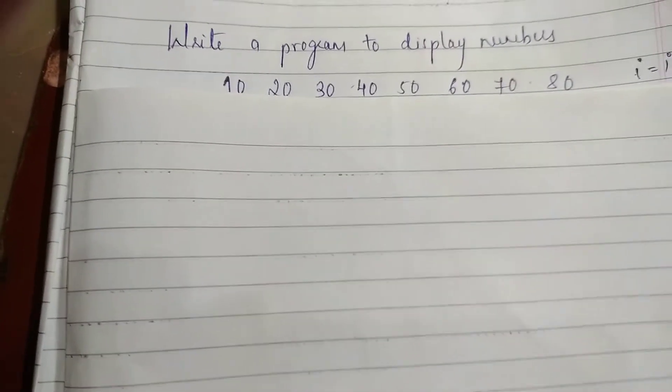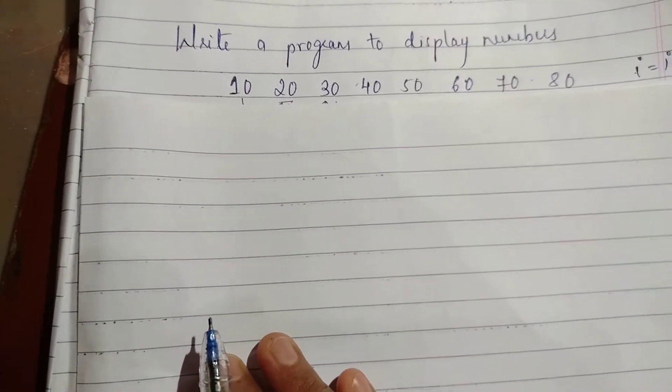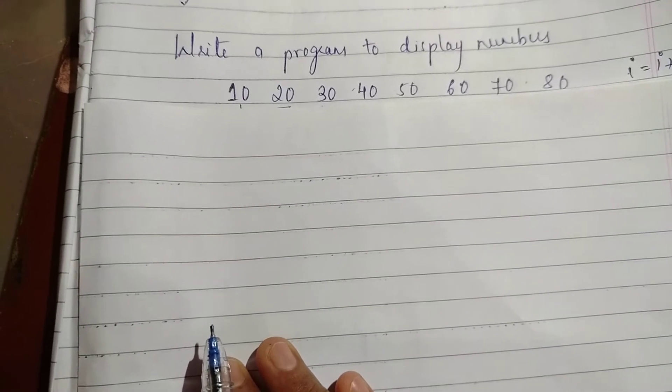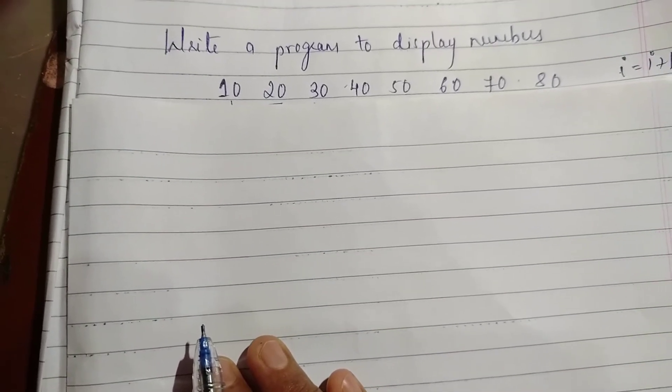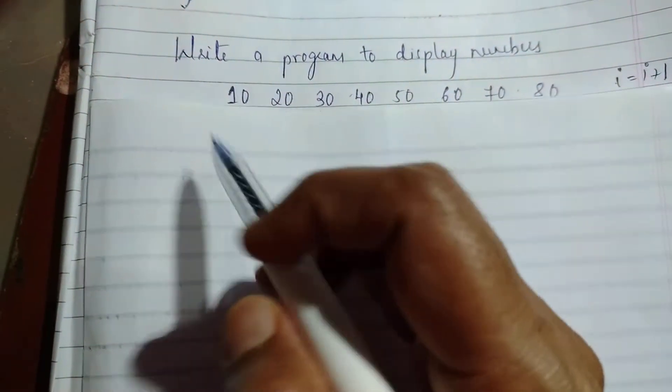We will look into a simple program to display the numbers from 10, 20, 30, 40, 50, 60, 70, and 80 using the while statement.